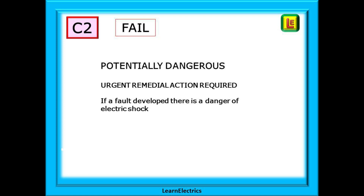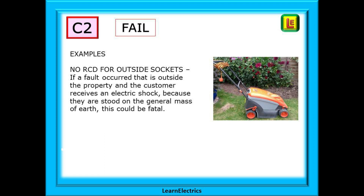Looking at the C2 type, this is also an automatic fail. It is classed as potentially dangerous and urgent remedial action is required. There might be no danger of electric shock right now at this moment, but if a fault developed there is then a danger of electric shock. An example would be a situation where there is no RCD for outside sockets and the customer has plugged in their electric lawn mower. The customer is not actually in danger whilst things are normal, but should the user cut through the cable, the ends may remain live, especially if plugged into a 32-amp circuit breaker. This actually happened a few years ago — the gentleman concerned bent down to pick up the cut cable and received a fatal electric shock.